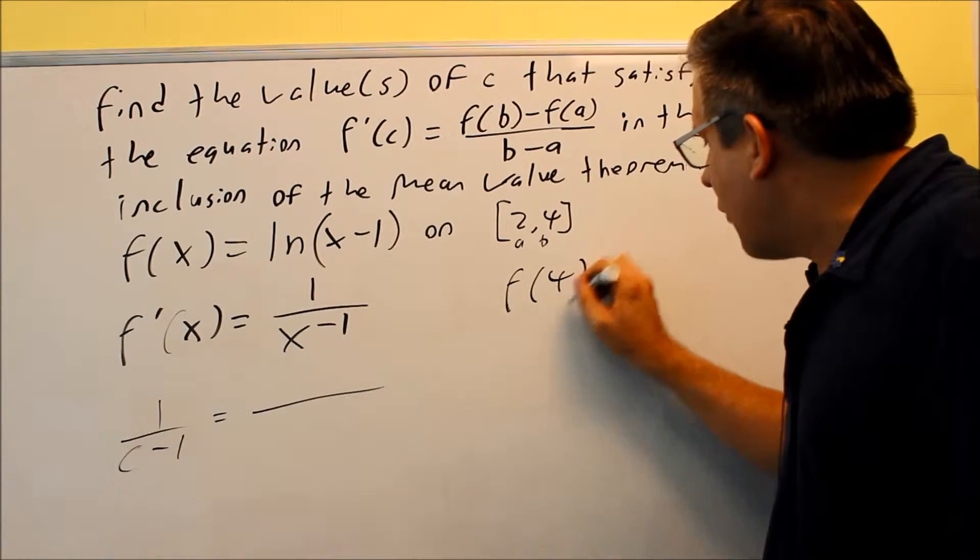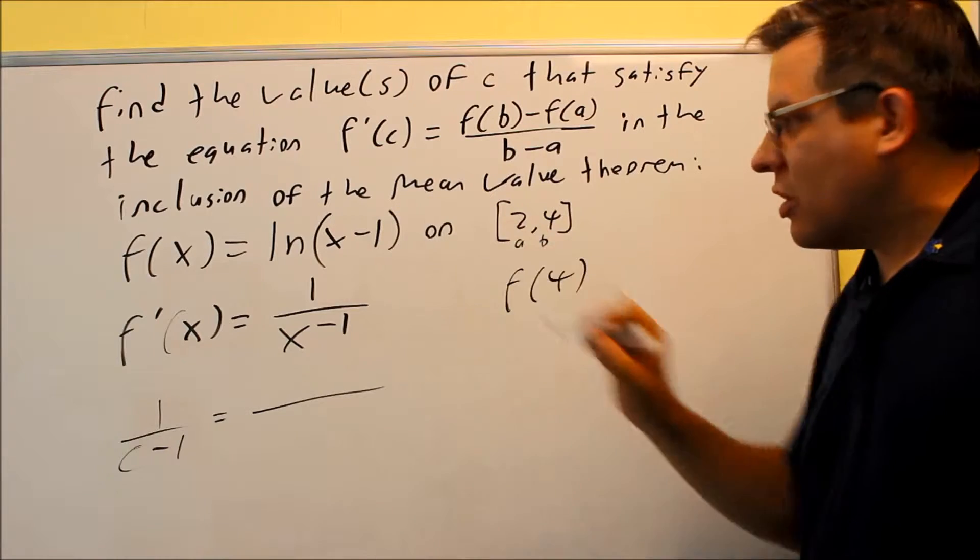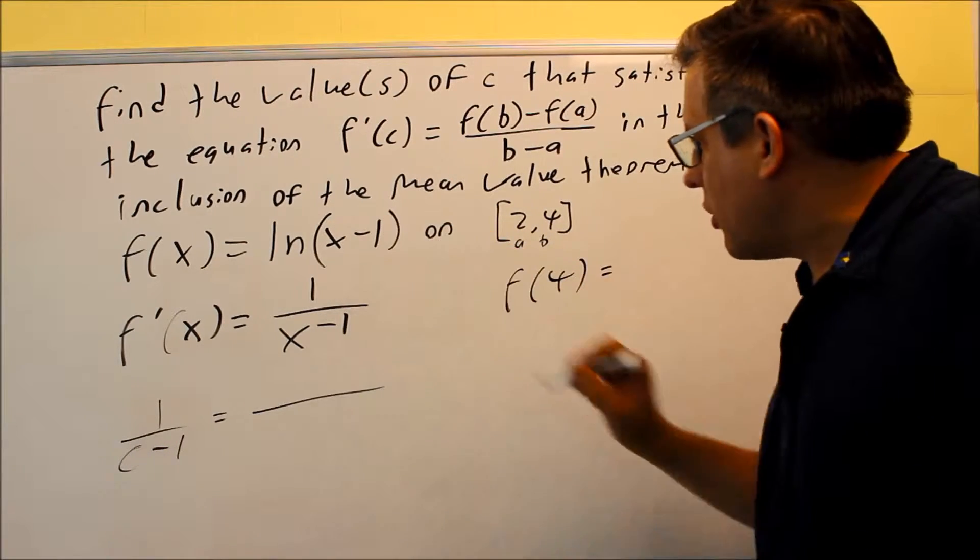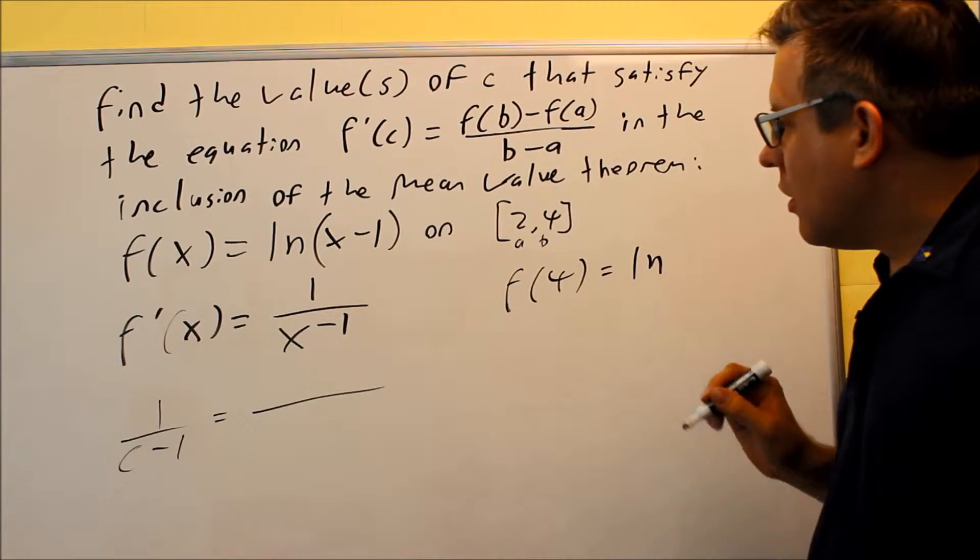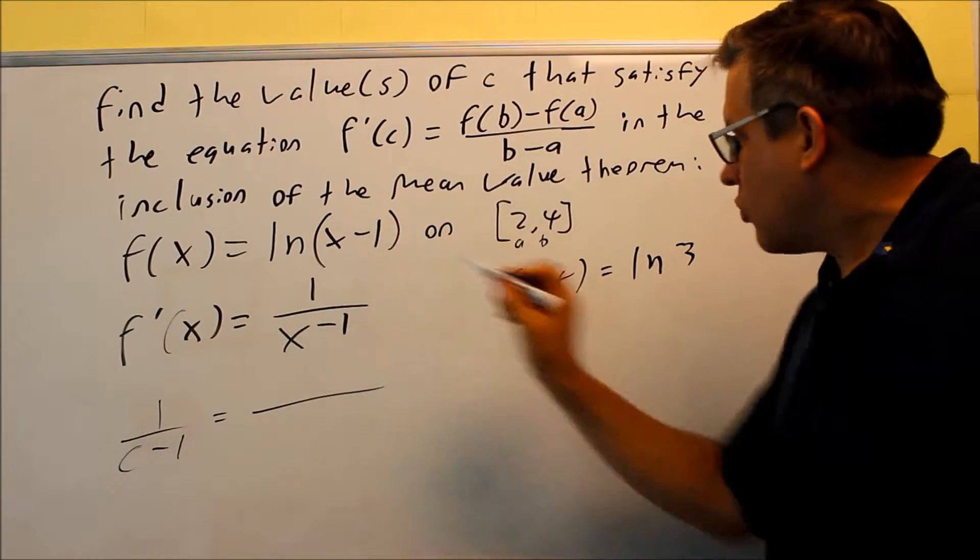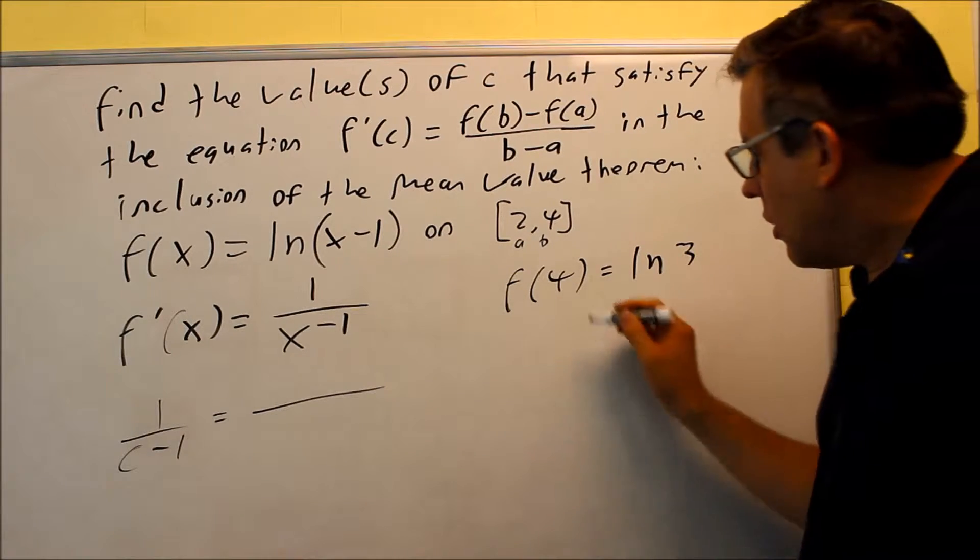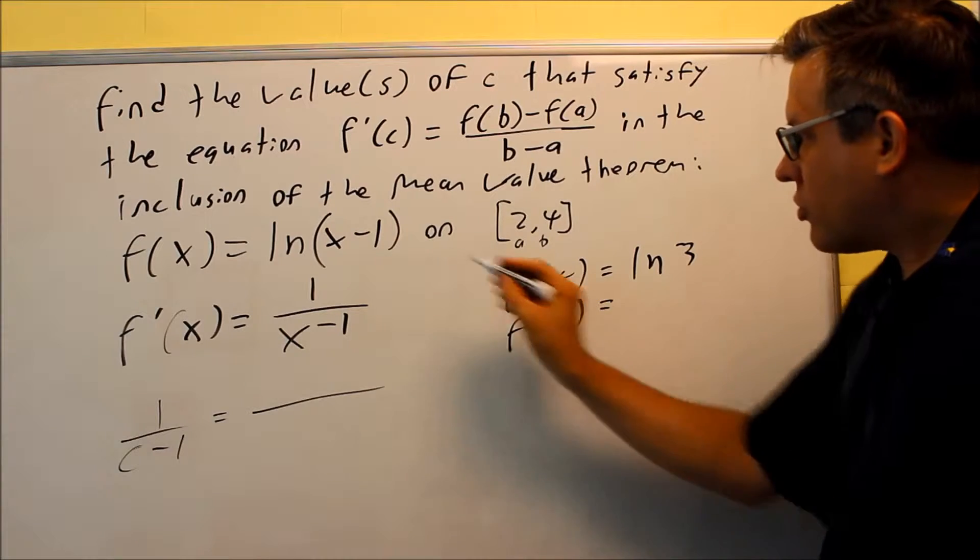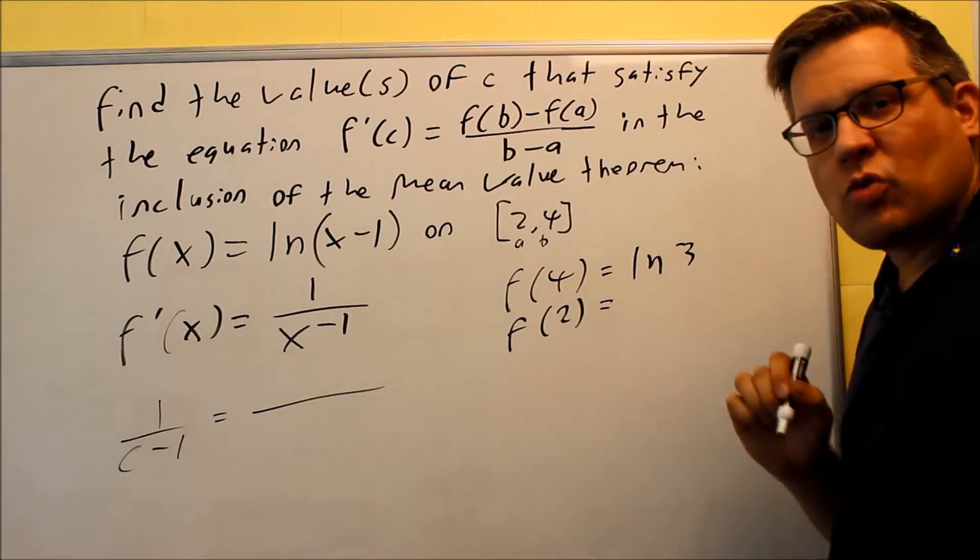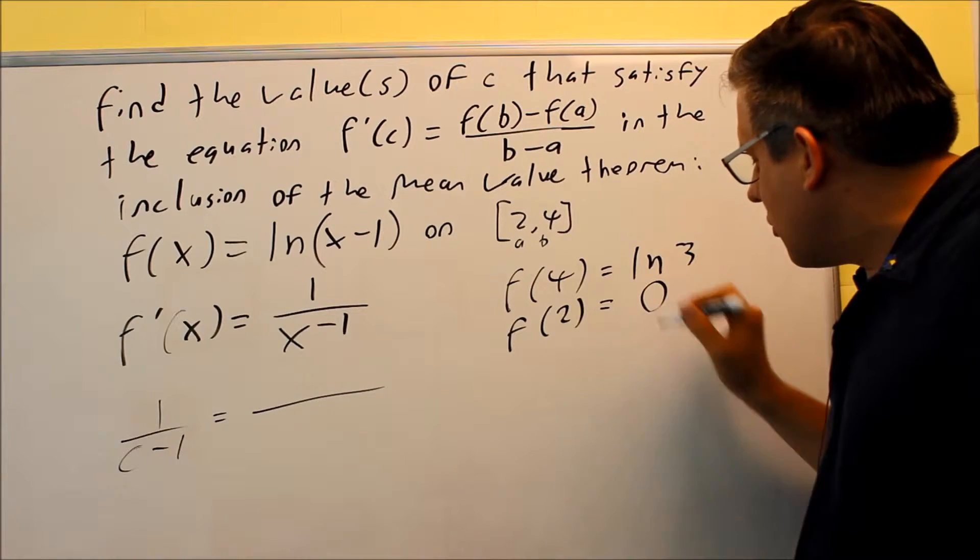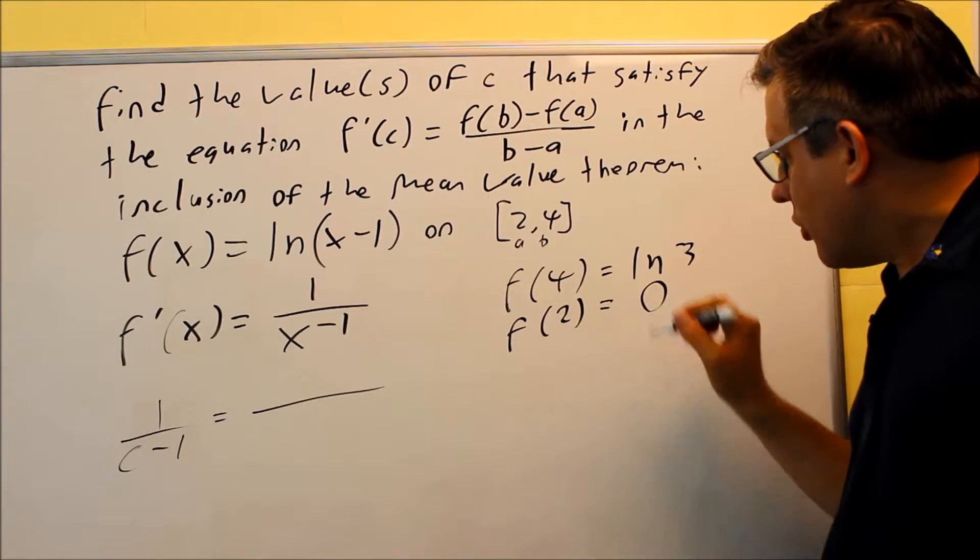Let's do f(4) first. Remember, we're putting this into the original function. If I put 4 in there, 4 minus 1 is 3, so I get ln(3). Now let's do f(2). If I put 2 in here, 2 minus 1 is 1, and the natural log of 1 is 0. So f(2) = 0.